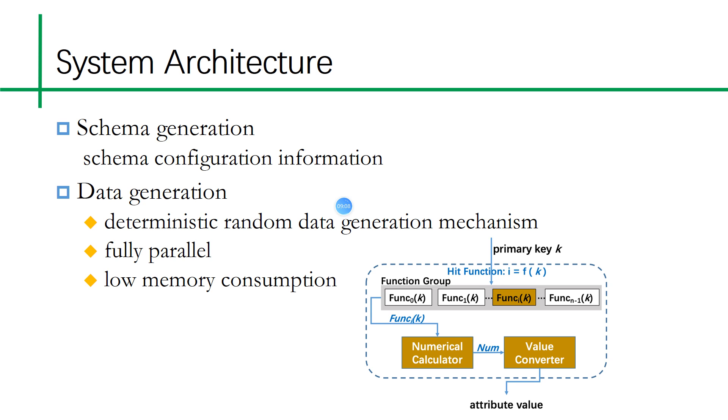For data generation, in order to ensure that the results can be calculated, we use a deterministic random data generation mechanism. All non-primary key attributes will be calculated based on the primary key. According to the primary key value, its function, numerical calculator, and value calculator finally get the attribute value. In order to ensure the efficiency of data generation, the parallel generation method is adopted and there is little memory consumption.